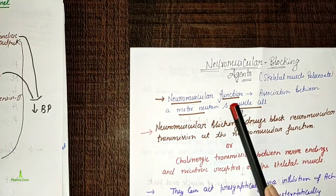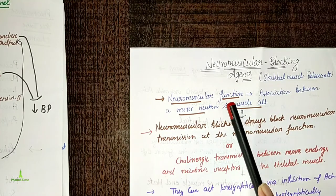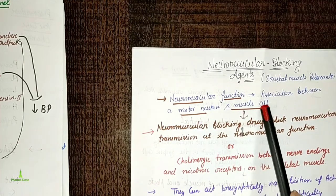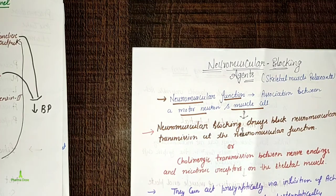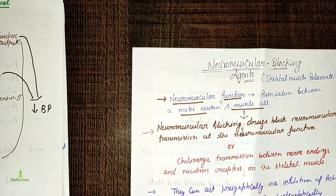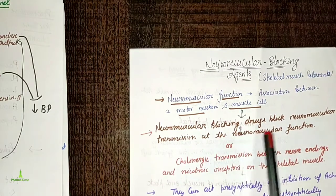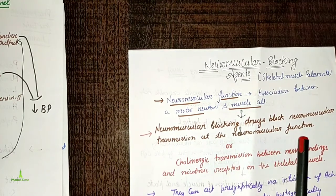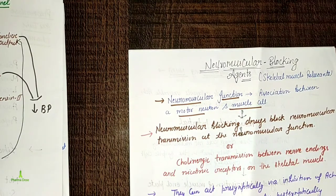Neuromuscular junction is the association between a motor neuron and a muscle cell. Neuromuscular blocking drugs block neuromuscular transmission at the neuromuscular junction.